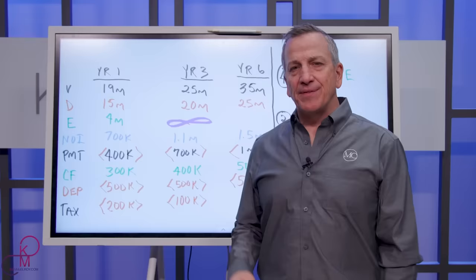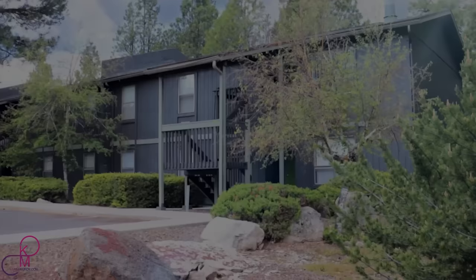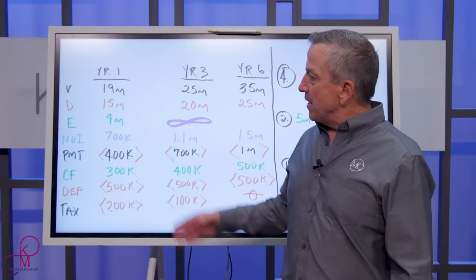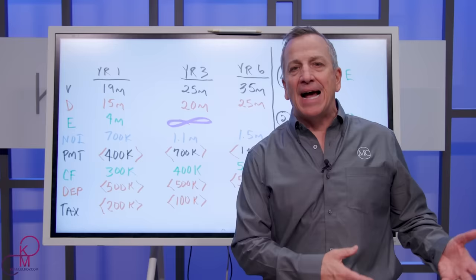This is a real example of a real property that we still own today. This is a 265 unit building that we bought many years ago. When we found it, we found that the property was a value add. In other words, it had been deteriorating for the last 20 years and it needed new life breathed into it. It needed upgrading, renovations and things like that.